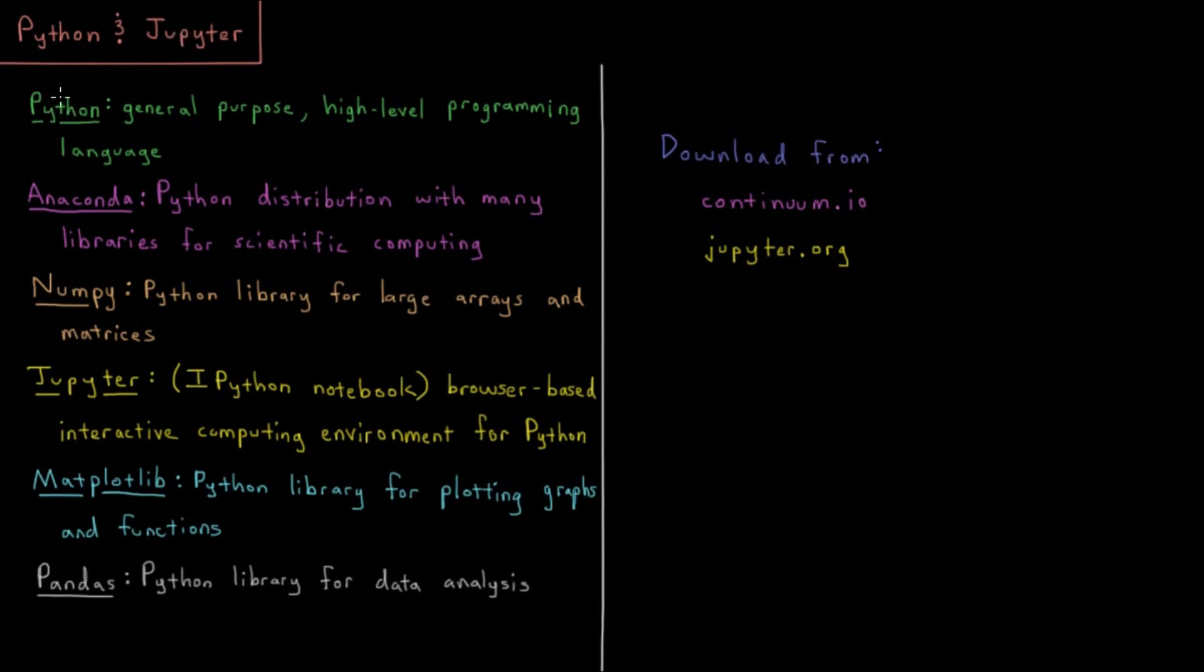Python is what we would call a general purpose high-level programming language. A programming language is just something where you would enter a sequence of text commands, and through some kind of interpreter you would run this program which would interpret those commands, do something, and display some output or result at the end of the program.